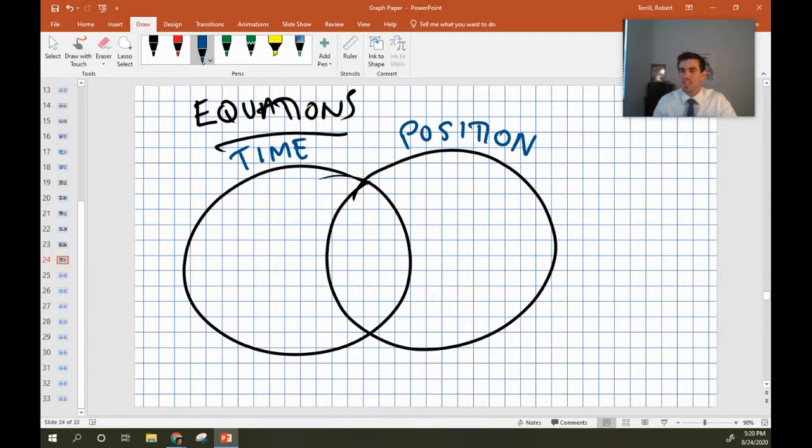So I wrote time and position there because there's three kinematic equations and we can separate them using a Venn diagram. We have the equation that uses only time. Notice that it has only a time variable, an acceleration variable, which they all have, and some velocity variables, which they all have. But this one has only time in it. It has no position at all.